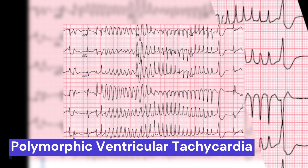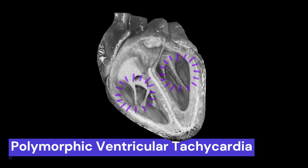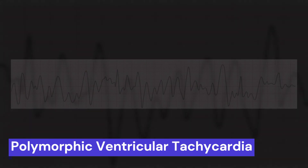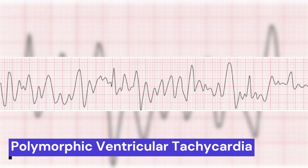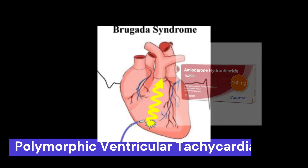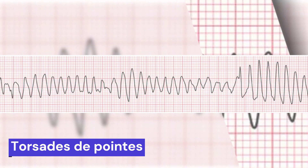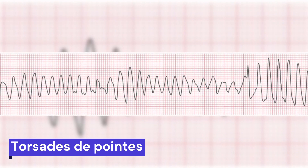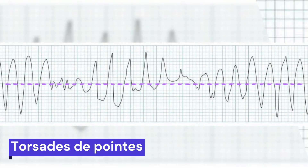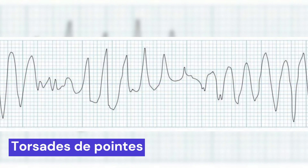Polymorphic ventricular tachycardia is irregular and may shift in amplitude and morphology due to different focal origins. Polymorphic VT can be caused by electrolyte imbalances, medications, or genetic factors. There is a type of polymorphic VT known as torsades de pointes, characterized by a twisting pattern of the QRS complexes around the horizontal axis of the isoelectric line on an EKG.